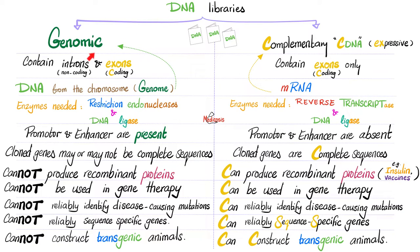How do we make genomic DNA libraries? Using restriction endonucleases to get the sequence we want, then DNA ligase to seal in the gaps. But cDNA starts from mRNA. How do you go from RNA to DNA? Reverse transcriptase. Don't forget to seal in the gap with DNA ligase. Promoter and enhancer are present in genomic but not in complementary DNA libraries. The cloned genes are complete sequences.